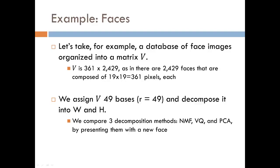And we are given 2,429 pictures of faces. We organize this data set into a matrix V that is 361 by 2,429, so each column represents an image. We then assign V 49 bases and decompose it into W and H matrices.